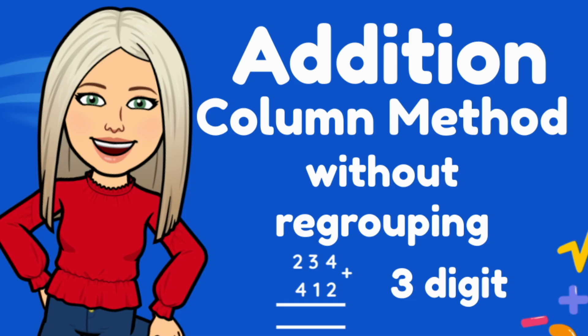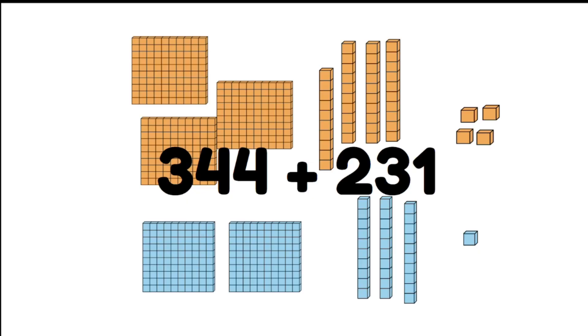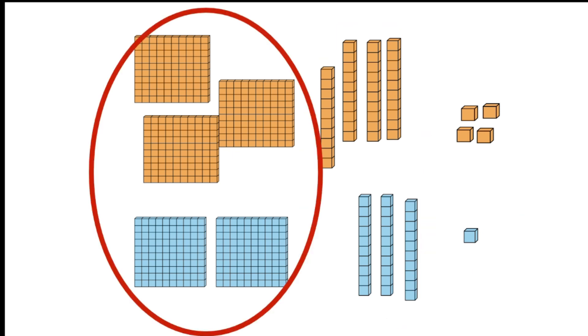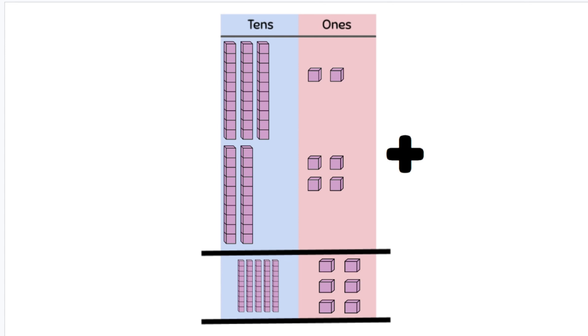Three-digit addition using the column or algorithm strategy. Addition involves working out the sum or total amount of something we have. To make our calculations easier, we're going to group our numbers together into ones, tens, and hundreds. The column or algorithm method makes this grouping process really quick and easy.